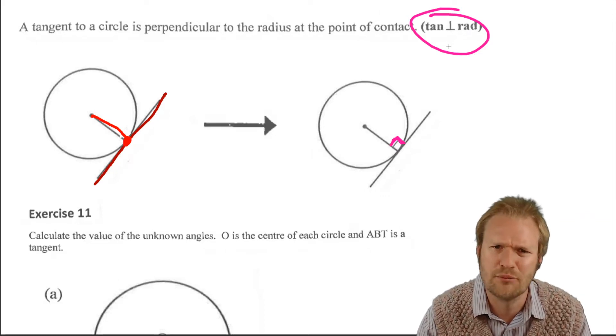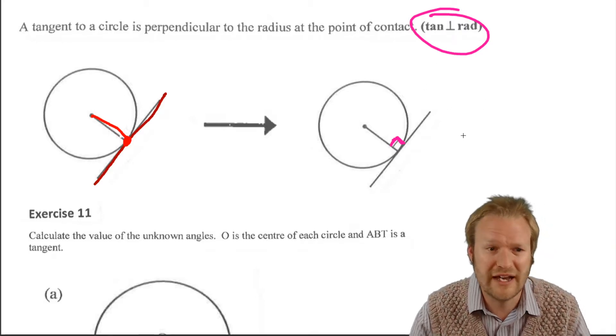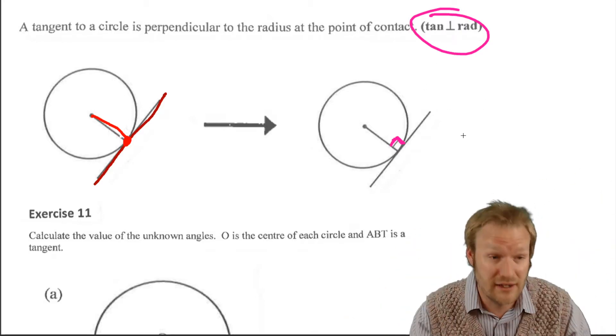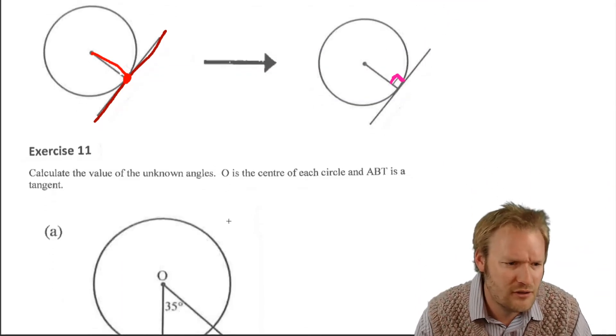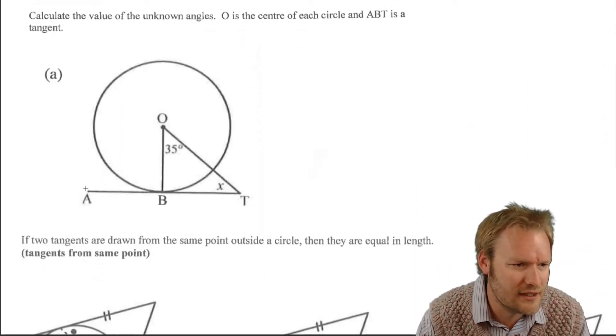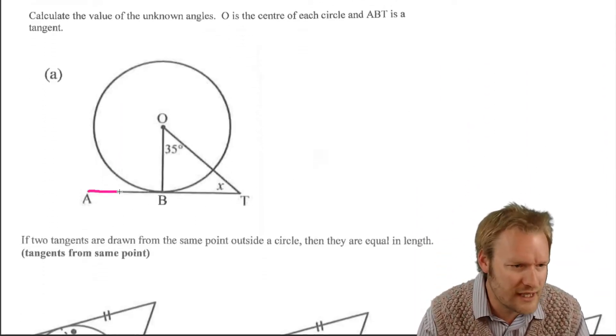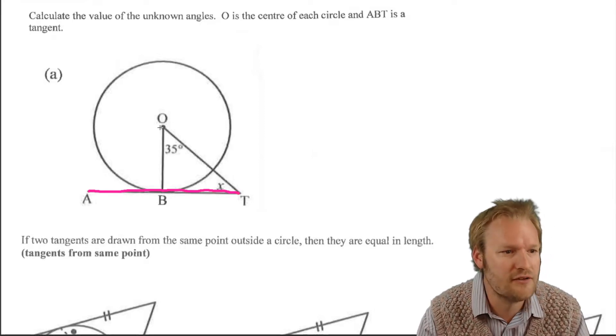That's another way of saying perpendicular, at right angles, or 90 degrees, something like that. So if we are given something like this diagram, we've got a tangent and we're given a radius.